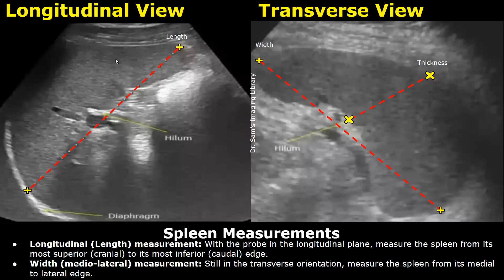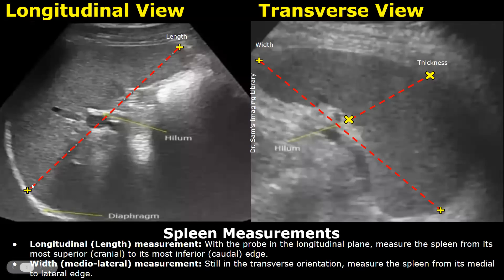After locating the spleen on ultrasound in a longitudinal view, you can obtain its length. When you get this image of the spleen, you can measure the length by placing one caliper just below the diaphragm. This is the diaphragm — this is the superior border of the spleen.